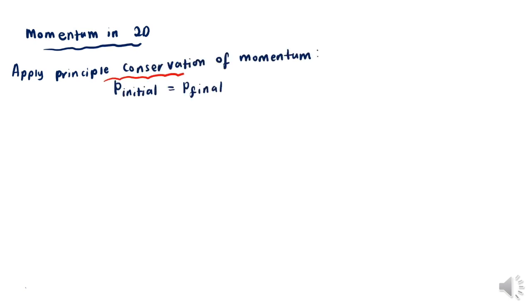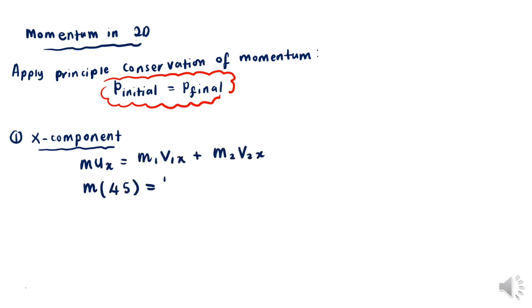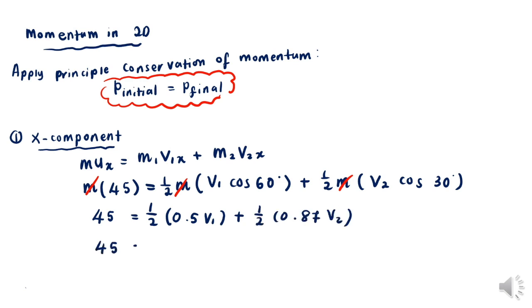Once we're done resolving all the velocities, now we can apply the principle of conservation of momentum to solve momentum in two dimensions. For the X component, M times Ux equals M1 times V1x plus M2 times V2x. Substitute all the information given, and since M is the same, we can cancel both sides. We're left with 45 equals 0.25 V1 plus 0.435 V2 as the first equation.